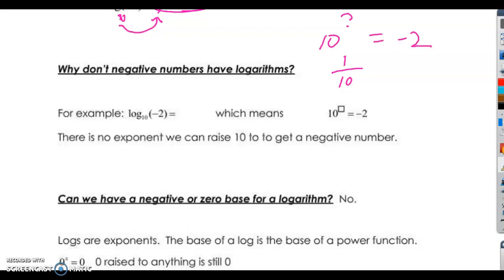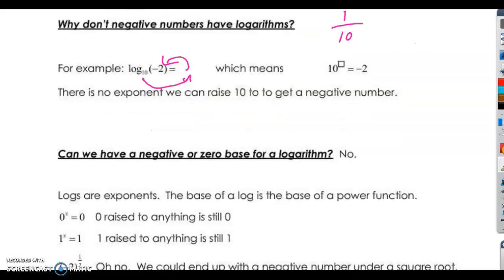And then why don't negative numbers have logarithms? So for example, log base 10 of negative 2. Well, that means 10 to the what power equals negative 2? I kind of just went over that. So there's no exponent we can raise to 10 to get a negative number.